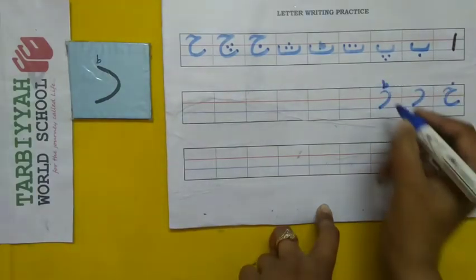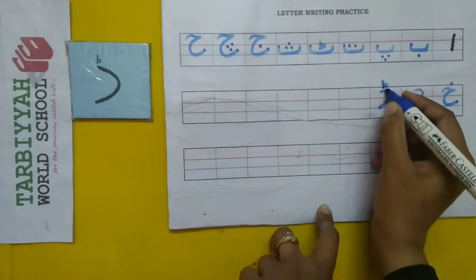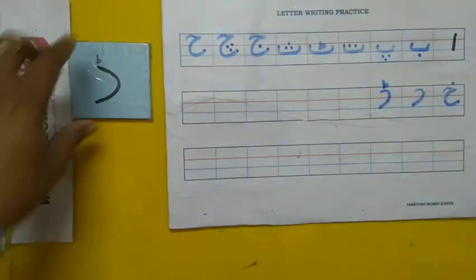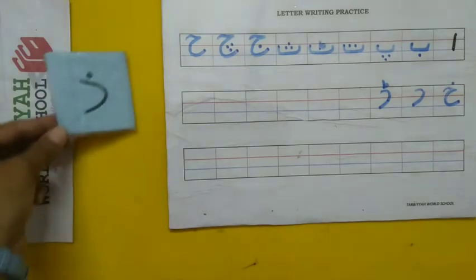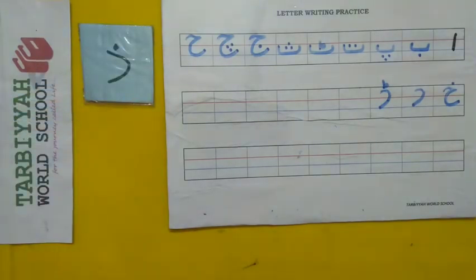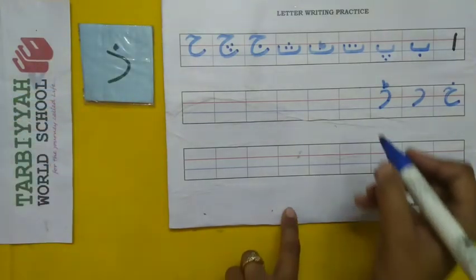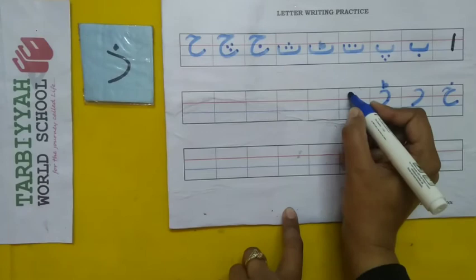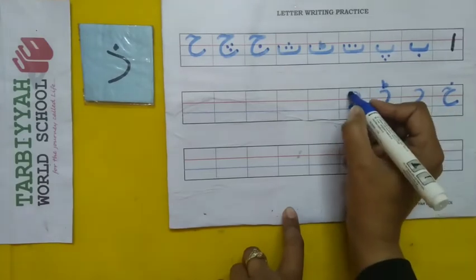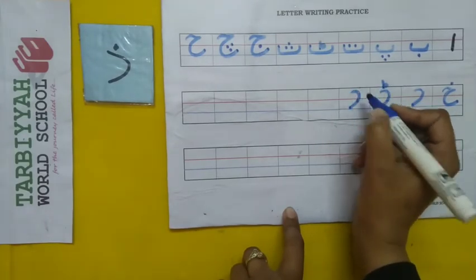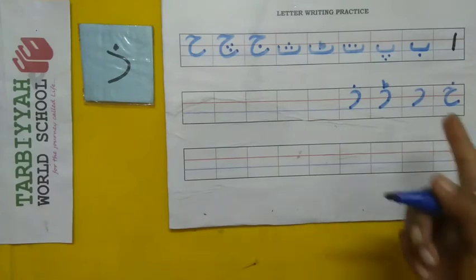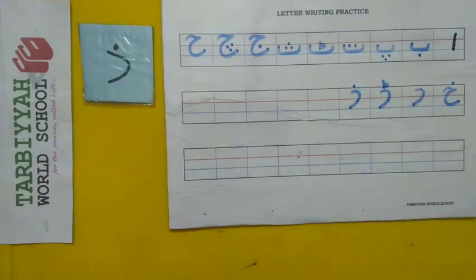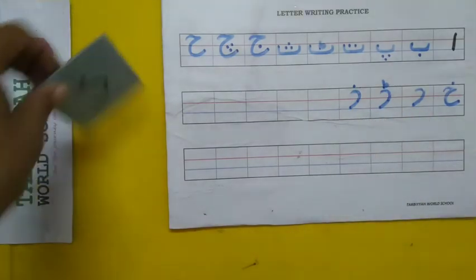Like this — Dal. And the next letter after Dal — yes, Zal. So how do we write Zal? One curve, and one dot on top. Like this. Dal, Zal.